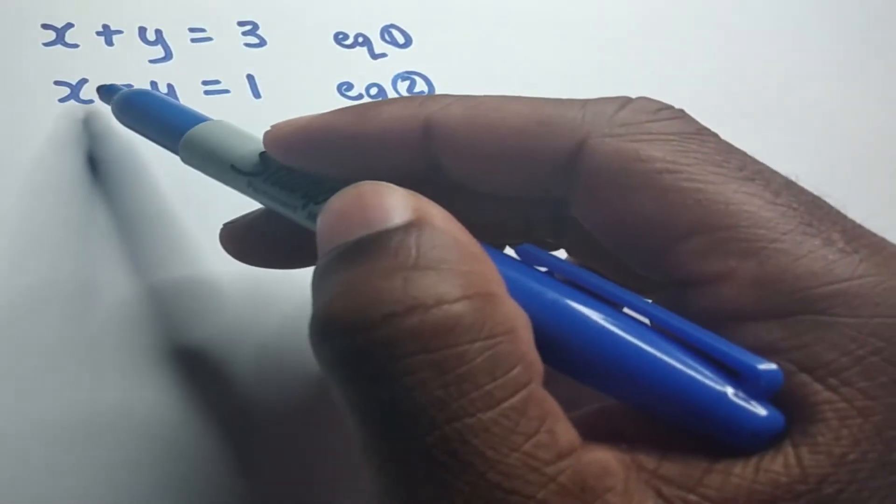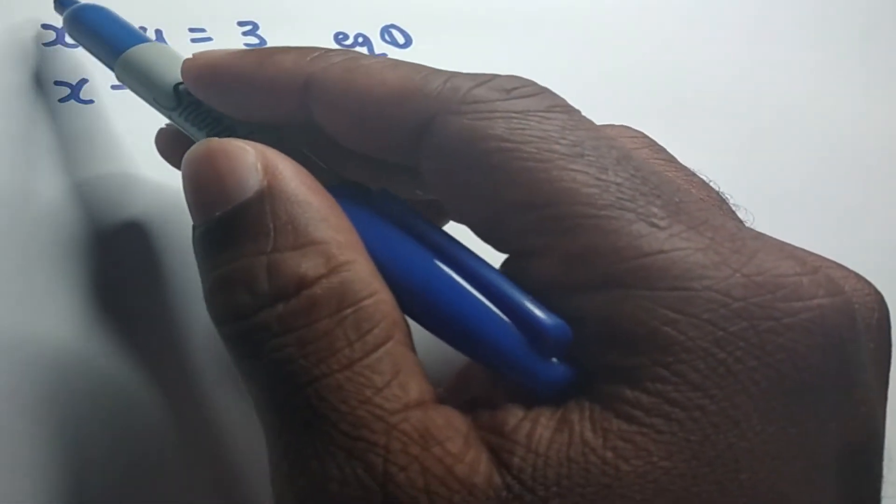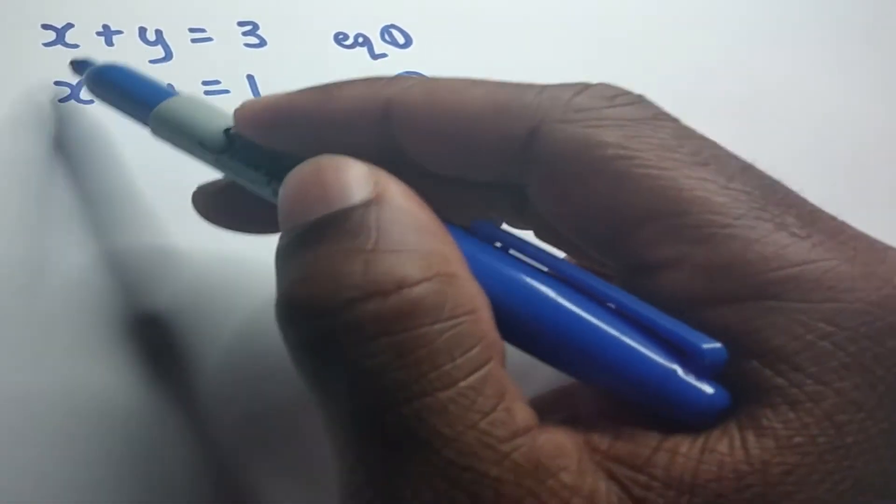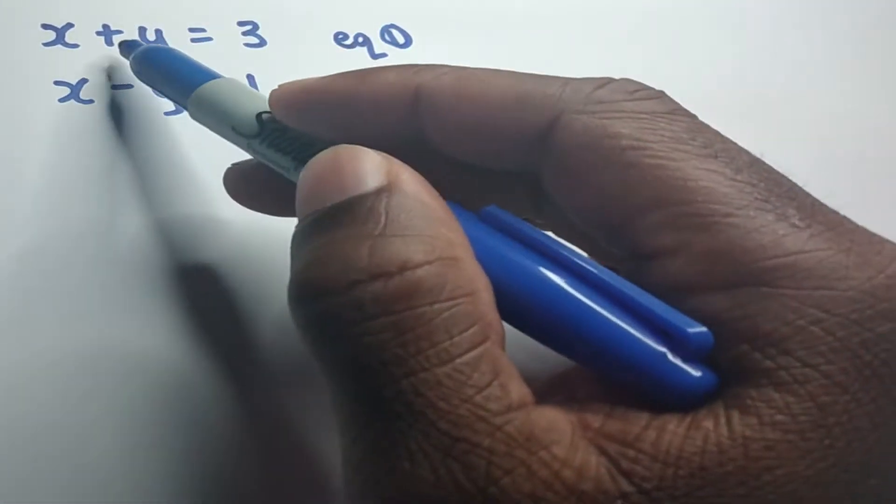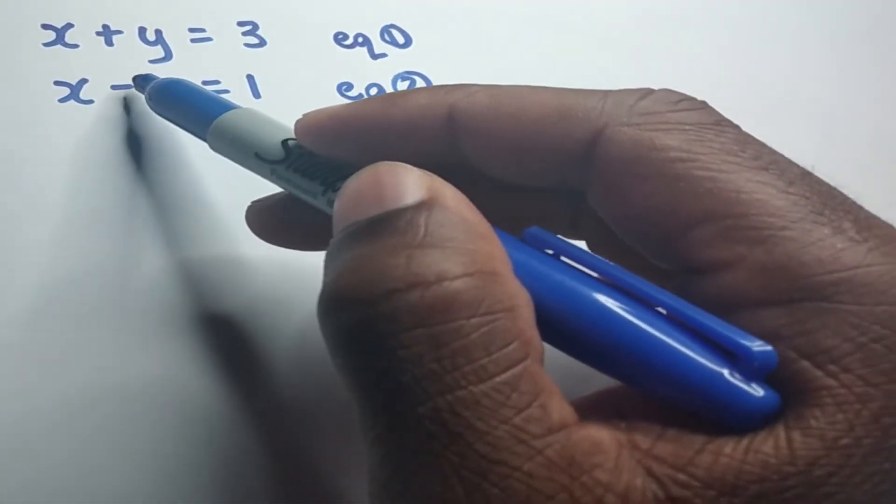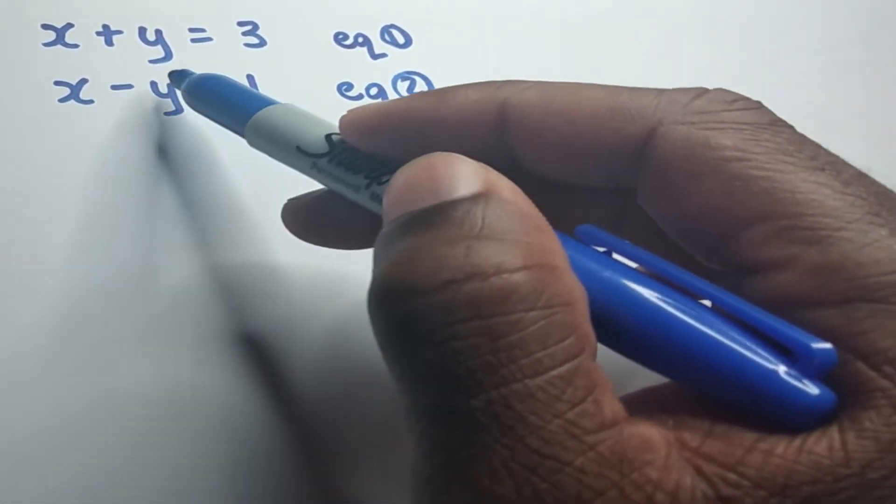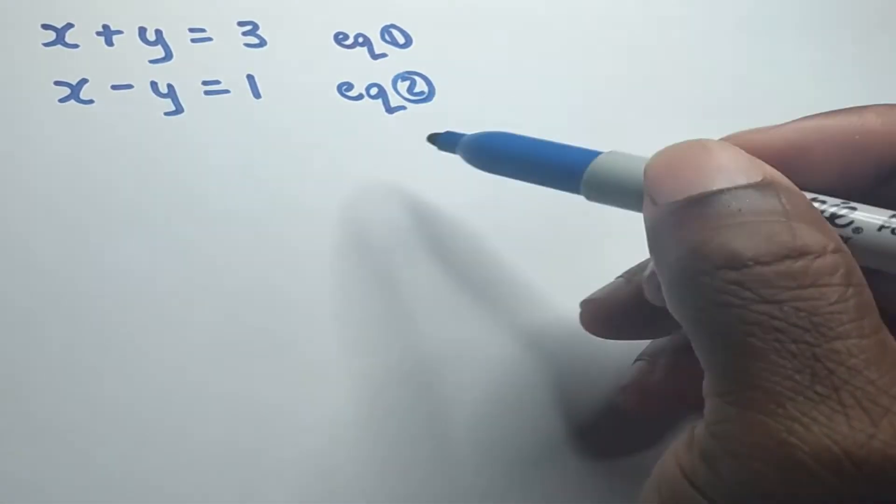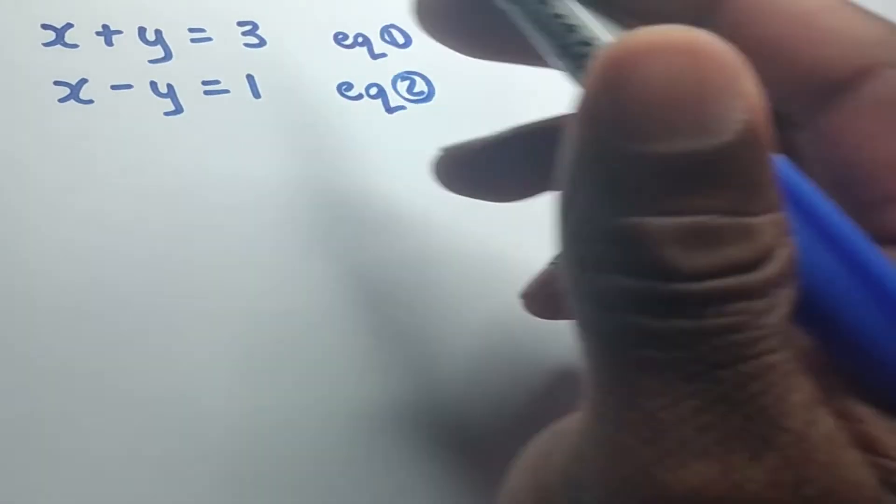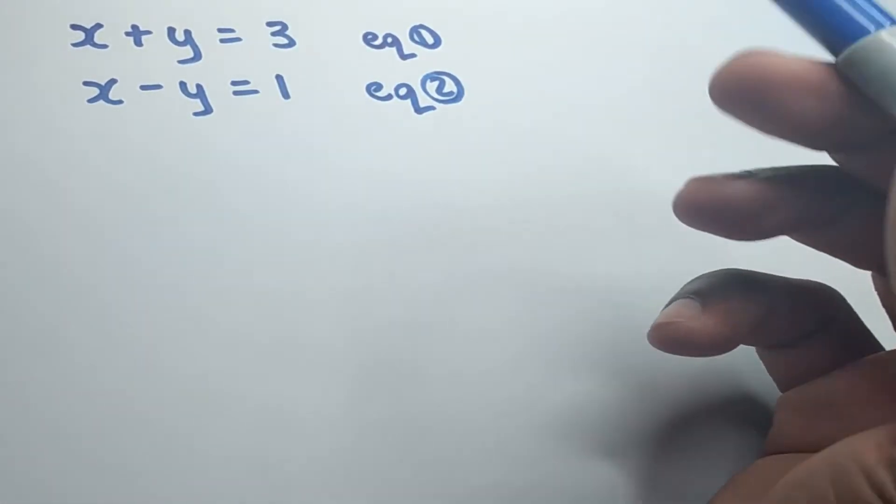And looking at this, we notice that the coefficient for x would have been 1. The coefficient for the x down here would have also been 1. The coefficient for the y up here is positive 1 and the coefficient for this y down here would have been negative 1. But the good thing is that both the x coefficients are the same, so we can progress.